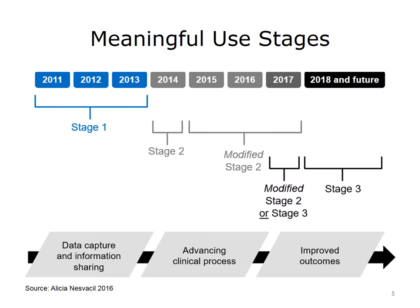Meaningful Use is being rolled out in stages. Stage 1 began in 2011, continued through 2012 and 2013, and established baseline criteria for electronic data capture and information sharing within and between EHRs. Stage 2 started in 2014, and in October 2015 program requirements were streamlined, resulting in a modified Stage 2 version applicable for reporting years 2015, 2016, and 2017. Stage 3 begins as early as 2017 as optional but is required in 2018. As stages progress, the goals leverage health IT to support health information exchange and interoperability, advance quality measurement, and maximize clinical effectiveness and efficiencies. Thus, meaningful use and process improvement are linked.